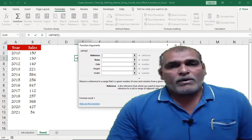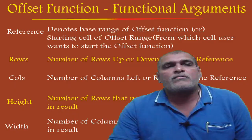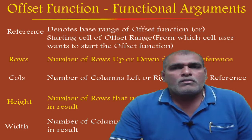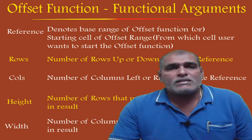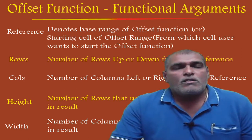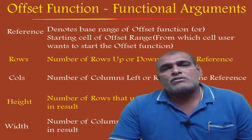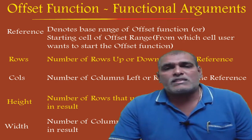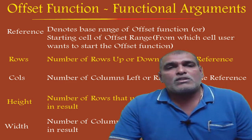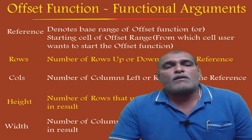Let me explain one by one. Here we can find the list of functional arguments. The first one is reference, which denotes the starting point of the OFFSET function, or we can say from which cell the user wants to start. So this is the base point of the OFFSET function.